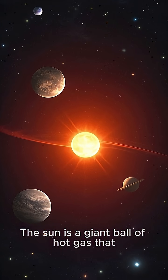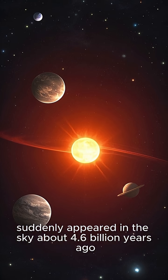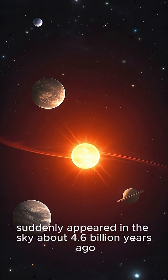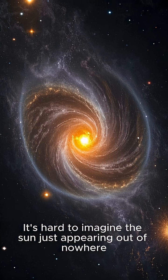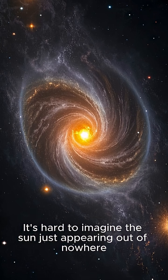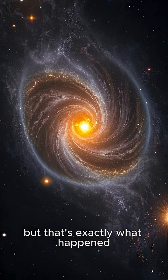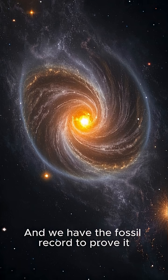The sun is a giant ball of hot gas that suddenly appeared in the sky about 4.6 billion years ago. It's hard to imagine the sun just appearing out of nowhere, but that's exactly what happened, and we have the fossil record to prove it.